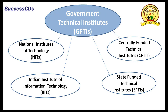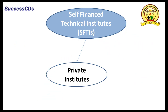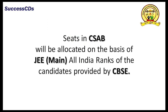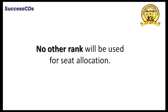Government Technical Institutes are National Institutes of Technology, Indian Institutes of Information Technology, Centrally Funded Technical Institutes, and State Funded Technical Institutes. Private Institutes are called Self-Finance Technical Institutes. Seats in CSAB will be allocated on the basis of JEE MAIN All India ranks of the candidates provided by CBSE. No other rank will be used for seat allocation.